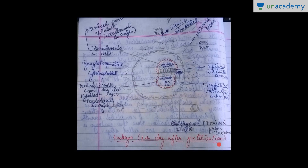On the 8th day after fertilization, the trophoblast differentiates into two layers: the inner cytotrophoblast and the outer syncytiotrophoblast, which is in direct contact with maternal blood. The trophoblast forms an embryonal stalk that attaches the inner cell mass. The inner cell mass differentiates into two layers: epiblast (primitive ectoderm) and hypoblast (primitive endoderm). Epiblast cells form amniogenic cells and an amniotic cavity, while hypoblast gives origin to the yolk sac cell layer, forming the primary yolk sac.